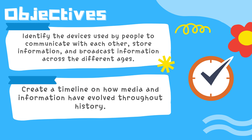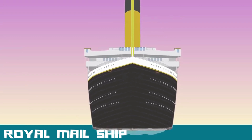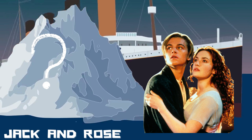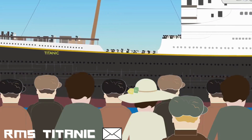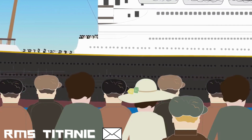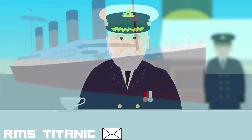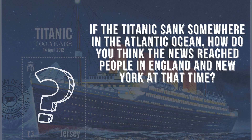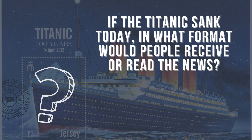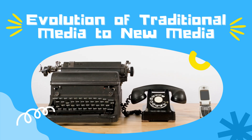Let me ask you a question. Familiar ba kayo sa tinatawag nating Royal Mail Ship? How about Kina Jack and Rose — ano kaya ang similar sa kanila? And if you guessed the Titanic, then you are right! Not many people know that the RMS in RMS Titanic stands for Royal Mail Ship, and at the same time, it stood for Royal Mail Steamer — meaning the Titanic was contracted to carry mail. Now, if the Titanic sunk somewhere in the Atlantic Ocean, how do you think the news reached people in England and New York at that time? How about if the Titanic sunk today — in what format would people receive or read the news? And that's what we're going to find out as we talk about our lesson for today entitled The Evolution of Traditional Media to New Media.